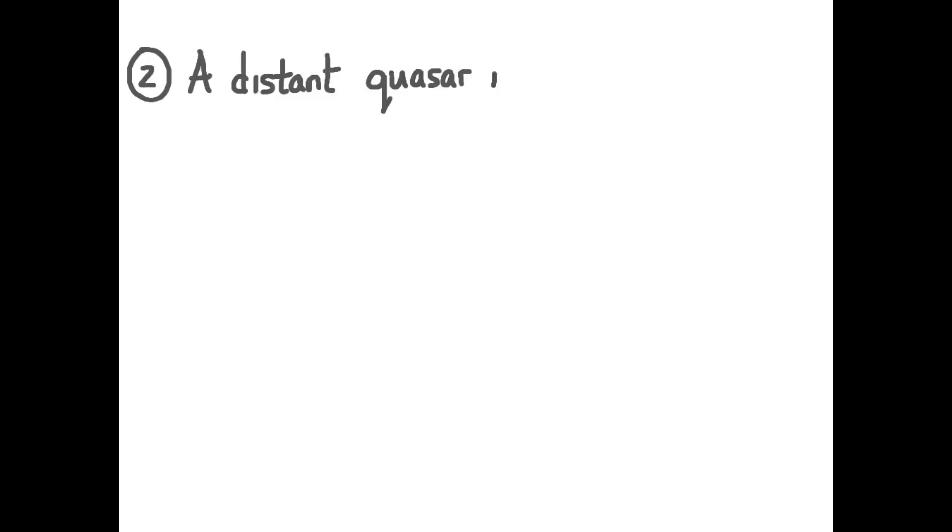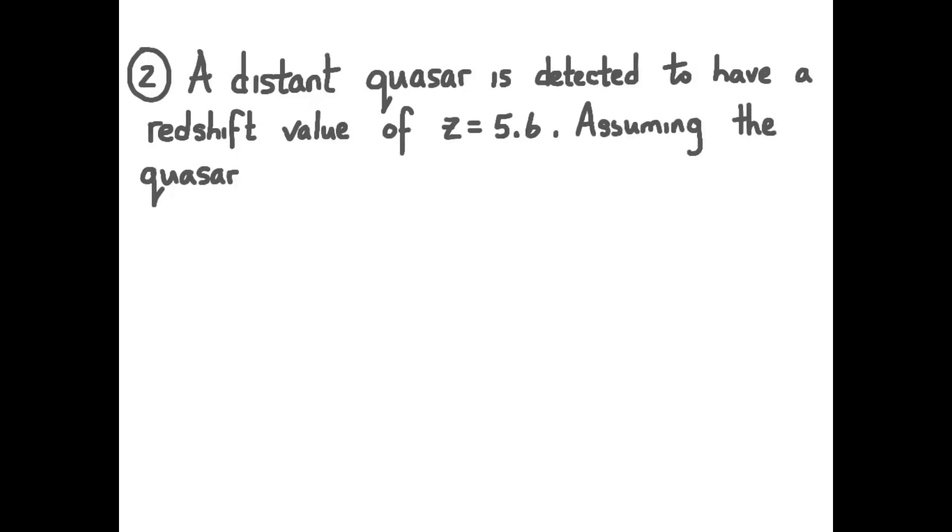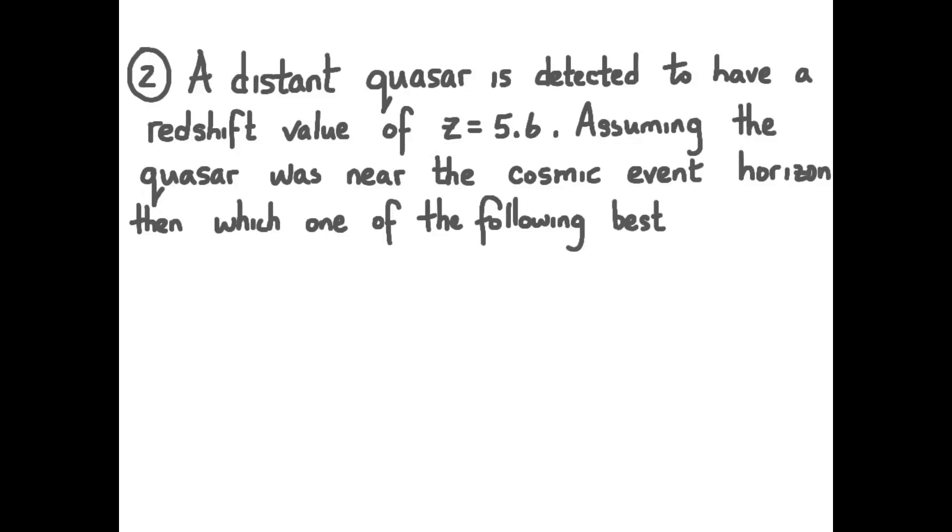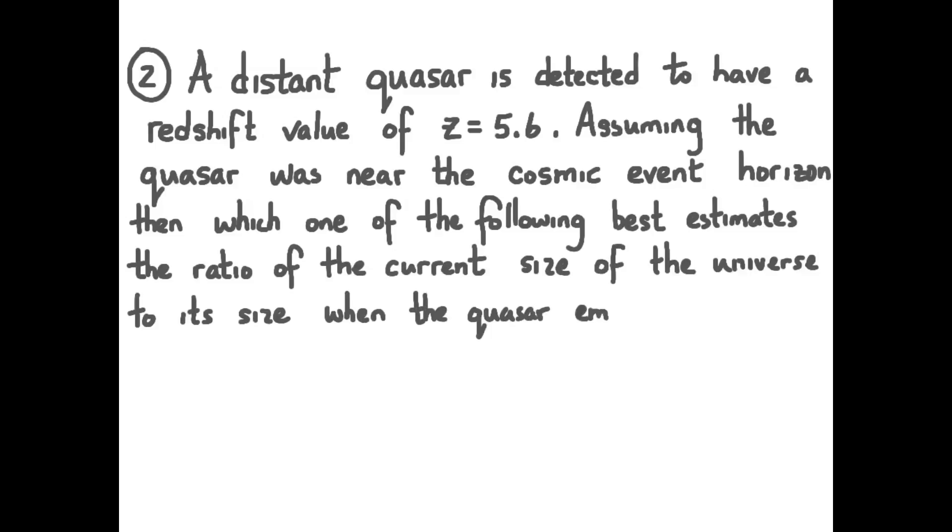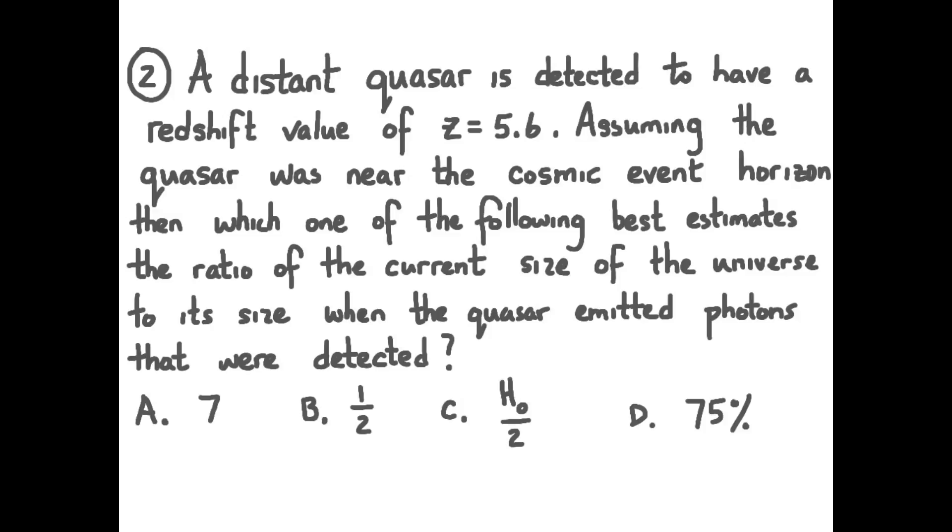Okay, a bit of a long question here. A distant quasar is detected to have a redshift value of z equals 5.6. Assuming the quasar was near the cosmic event horizon, then which one of the following best estimates the ratio of the current size of the universe to its size when the quasar emitted photons that were detected? A 7, B 1.5, C Hubble constant over 2, and D 75%. Pause your viewer and try this question.